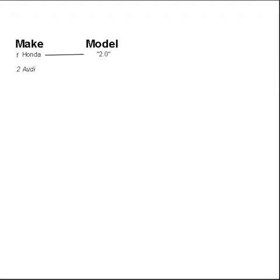Now let's say you had a model called 2.0, that would be model number 1. Let's say you had a model with the same name under Audi, that would be model number 2.